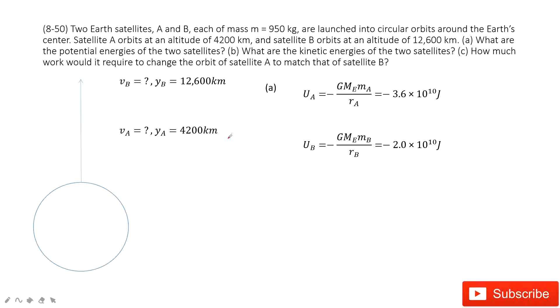Welcome to my channel. I'm Zhang Zingshu. Let's look at problem 50 in Chapter 8. Chapter 8 is about the conservation of energy. As you can see, this is the Earth and there are two satellites A and B. They have the same mass and they do circular motion around the Earth with different locations, yA and yB.